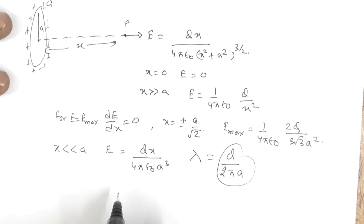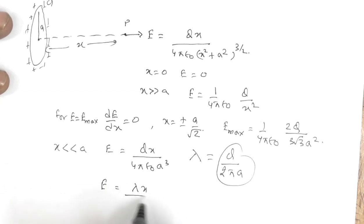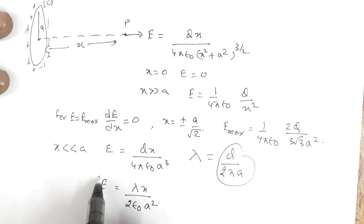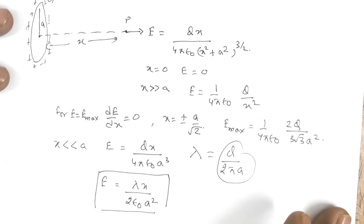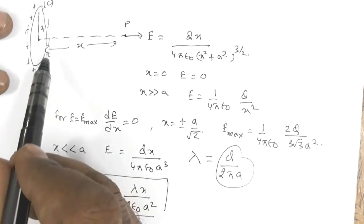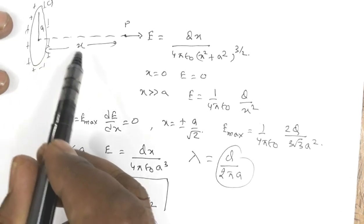...by λ, so E = λx / (2ε₀a²). This is the expression in terms of linear charge density. Now if we place a negative charge close to the ring, for small values of x...